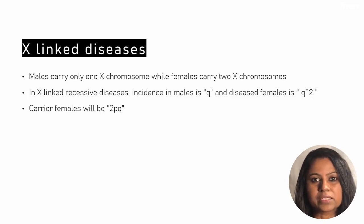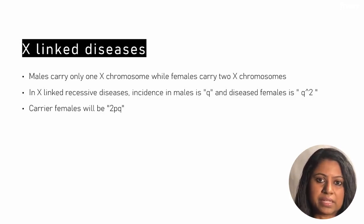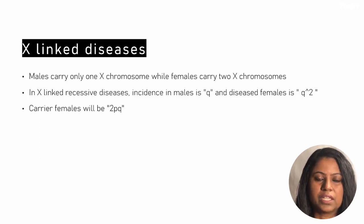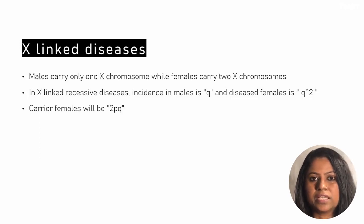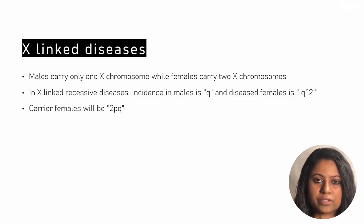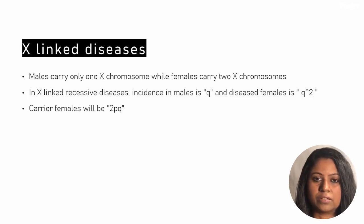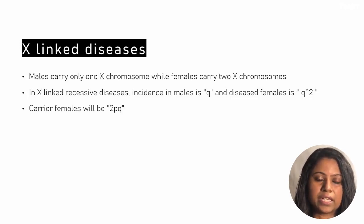In X-linked recessive disorders, the incidence in males equals q, because they only need one diseased gene to express the disease. The incidence in females equals q², because they need two diseased genes. The frequency of female carriers equals 2pq.